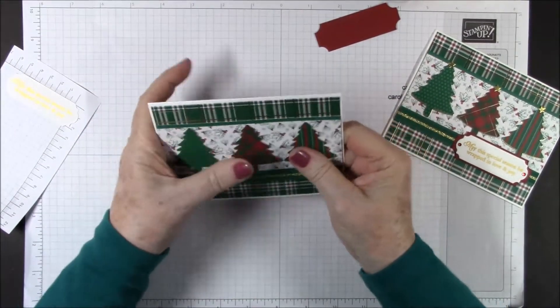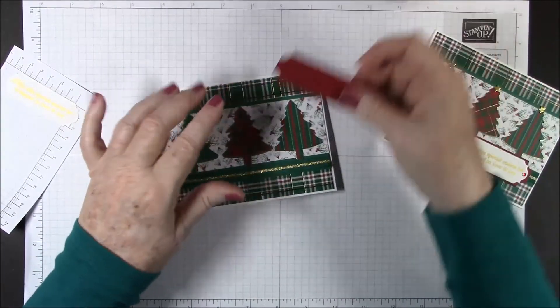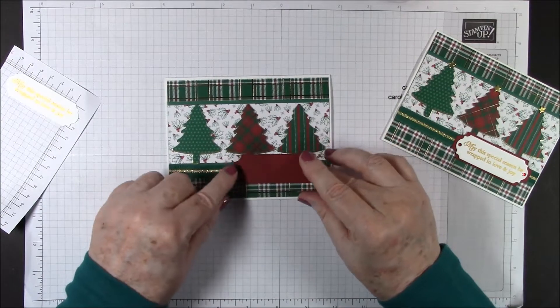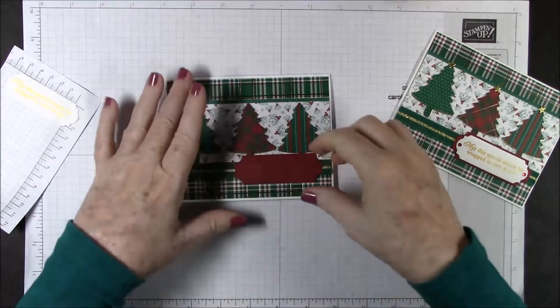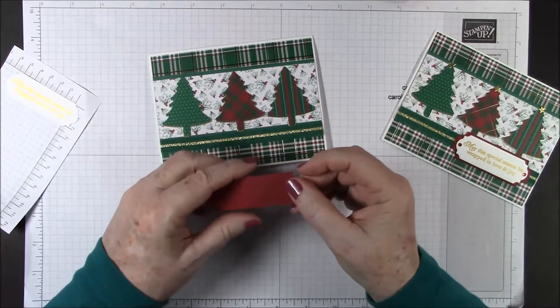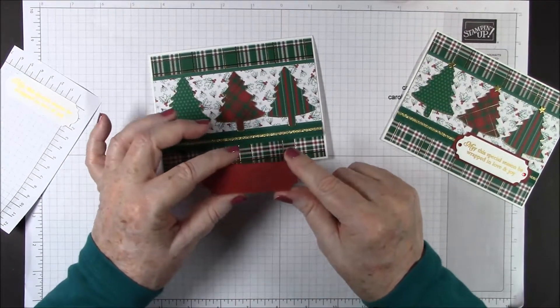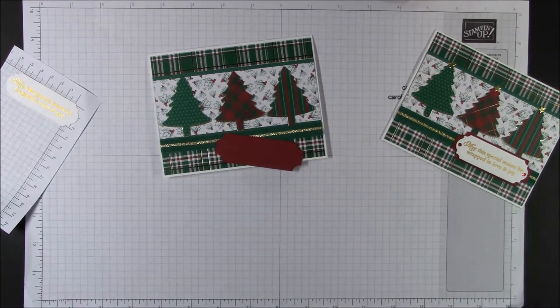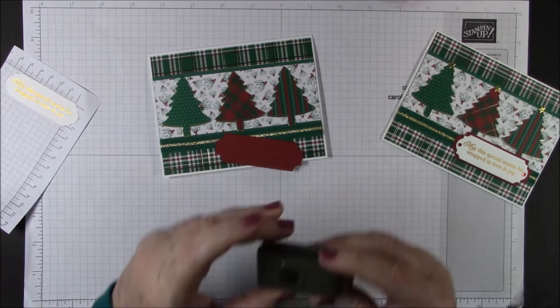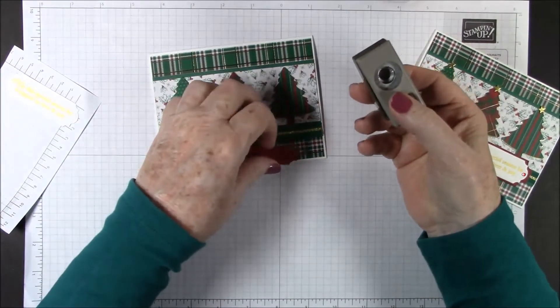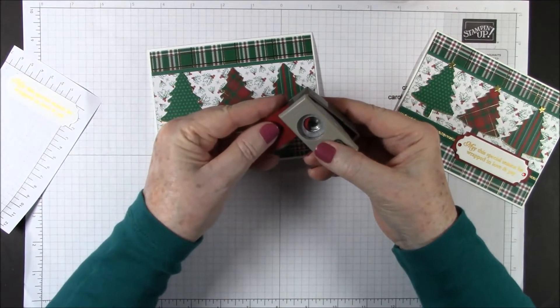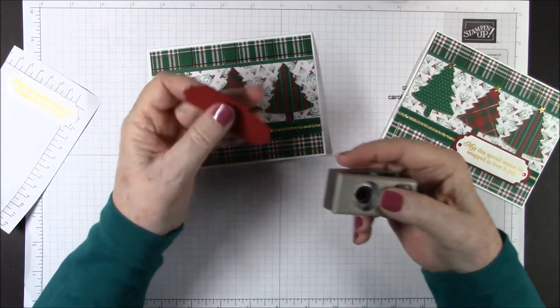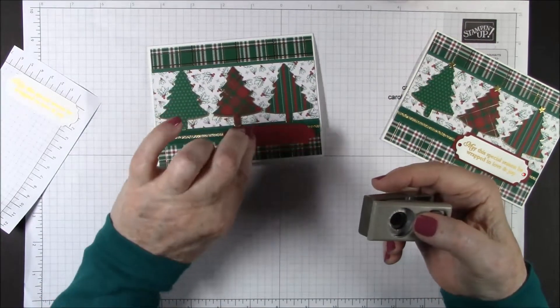That's in place. Now we want to do our label. It's going to go right about there over the ribbon. This label started out with cherry cobbler, two and seven eighths by one inch, and then I took my half inch punch and I put it in one quarter of the way and punched it on each corner.